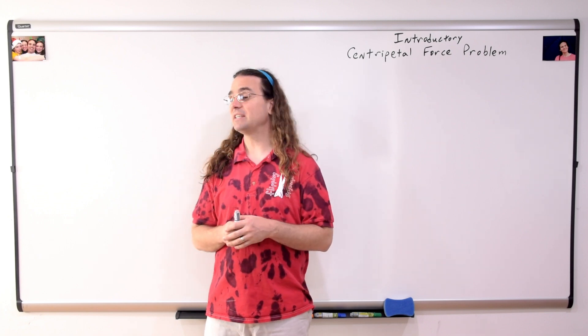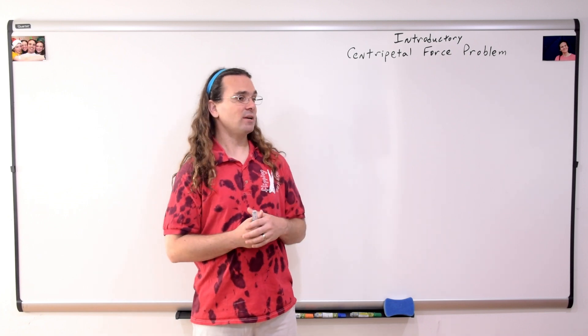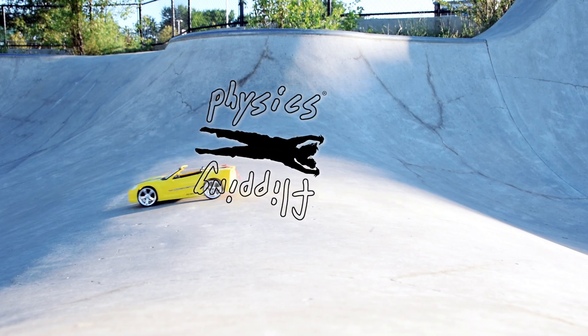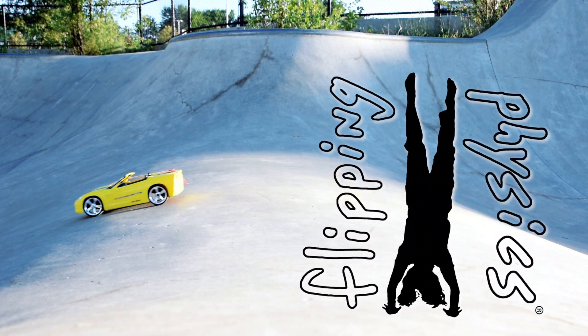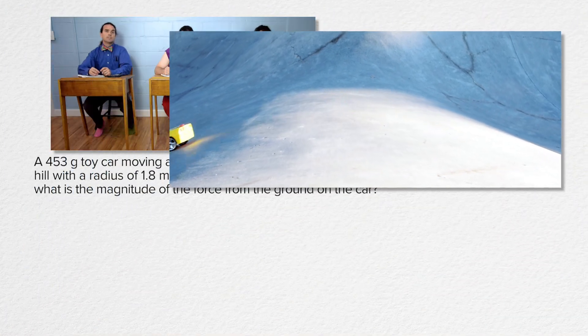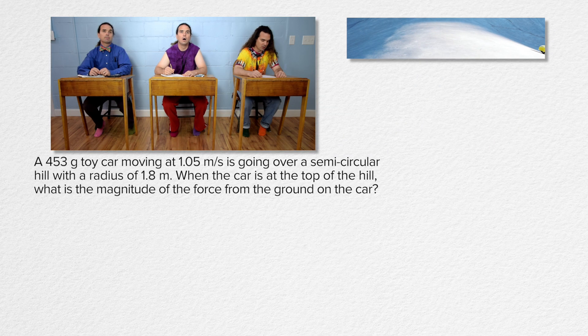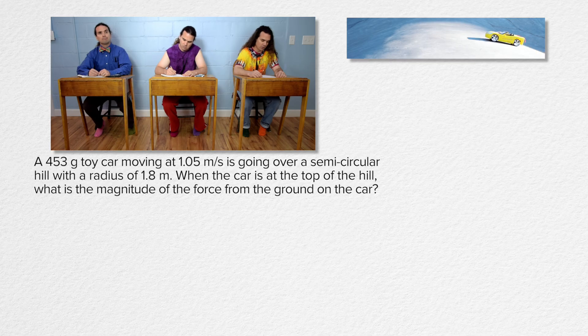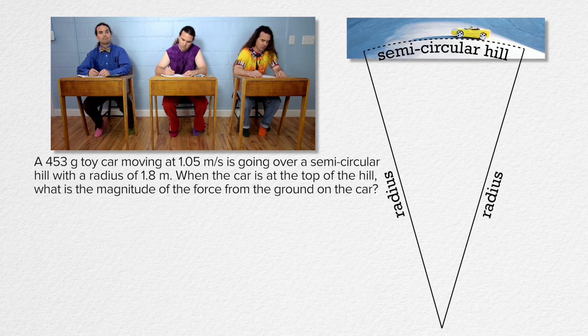Good morning. Bo, please read the problem and Billy, please translate. Flippin' Physics! A 453 gram toy car moving at 1.05 meters per second is going over a semicircular hill with a radius of 1.8 meters. Please stop.